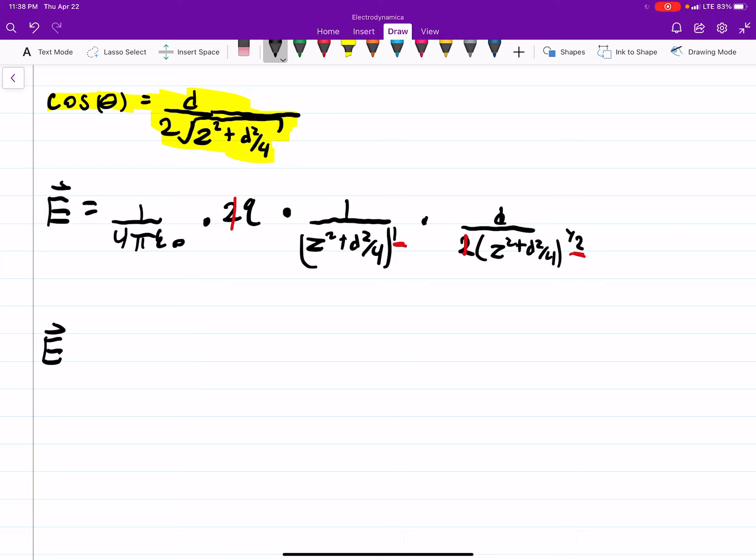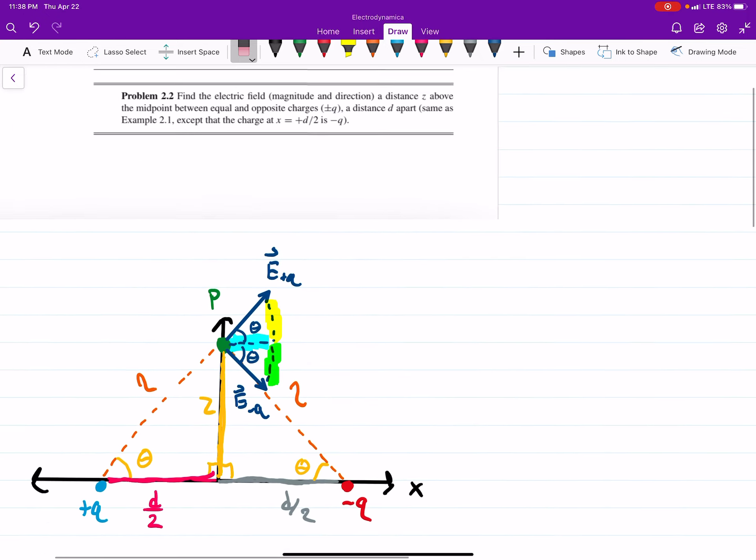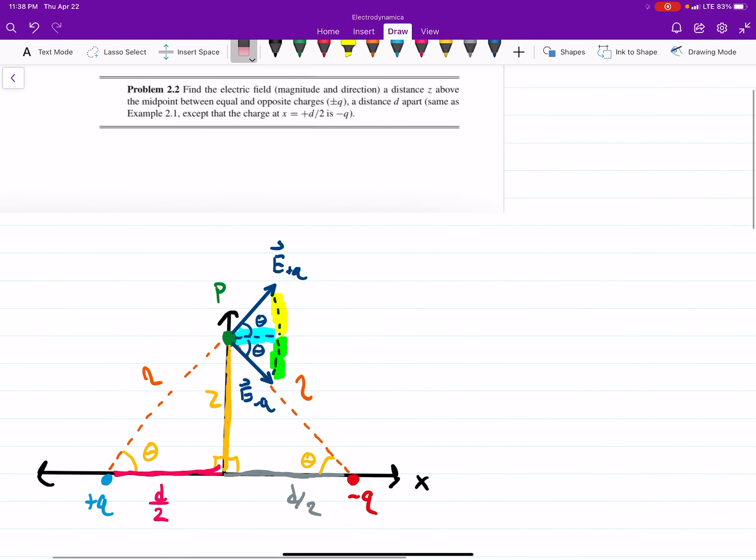So then your E field and this is in the i hat direction is 1 over 4 pi epsilon naught times q times d over z squared plus d squared over 4 to the 3 fourths and then i hat direction. This is giving the direction. It's saying that's in the x direction. That's what the i hat is. And if you wanted the magnitude well then you just wouldn't have your i hat there. So that is your E field. Hopefully that helps some people.